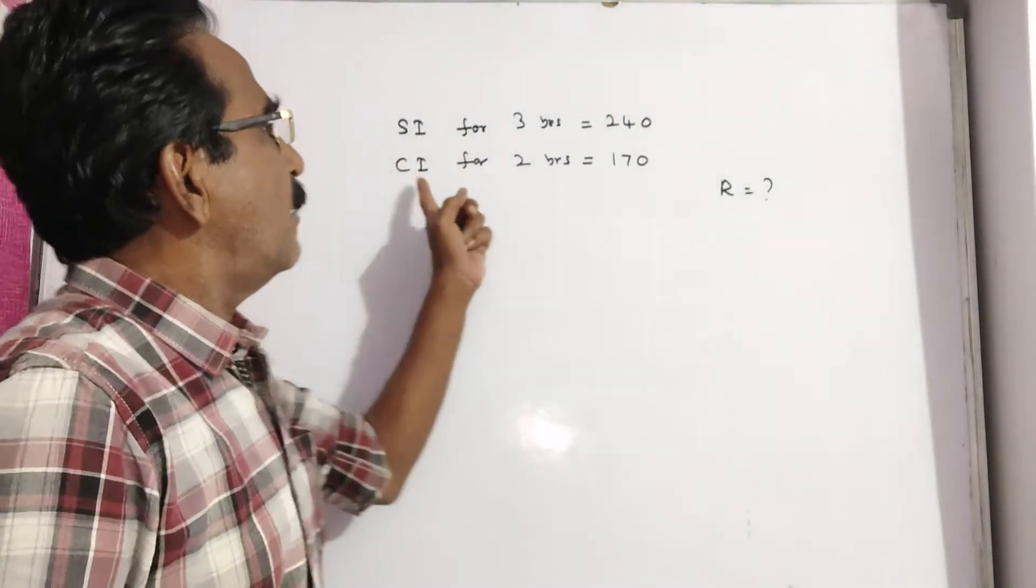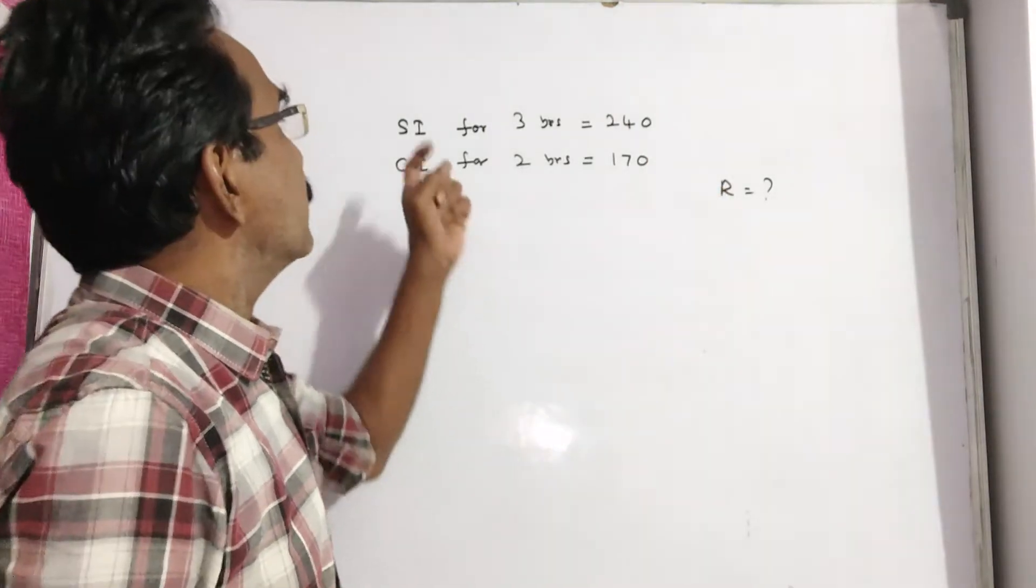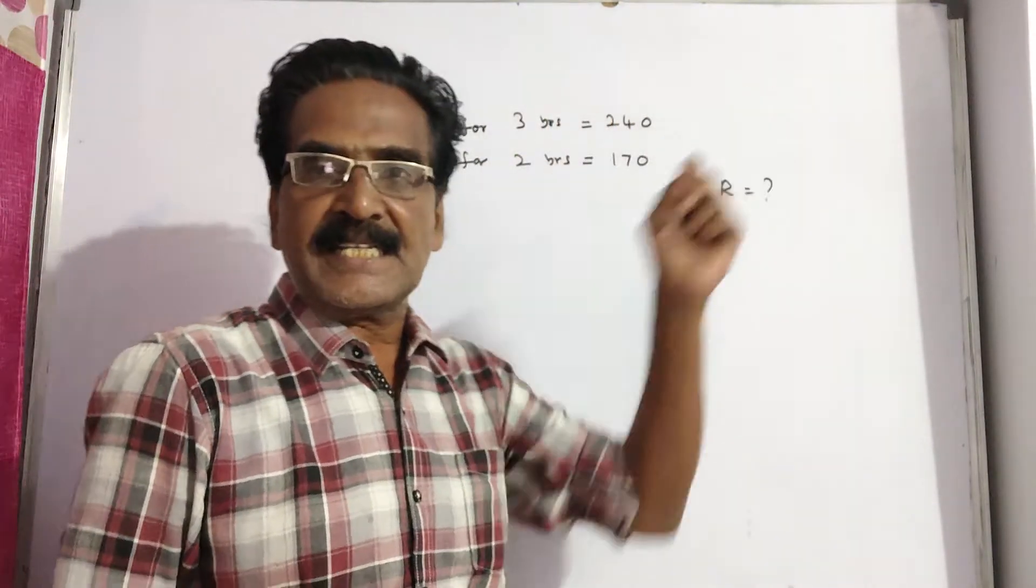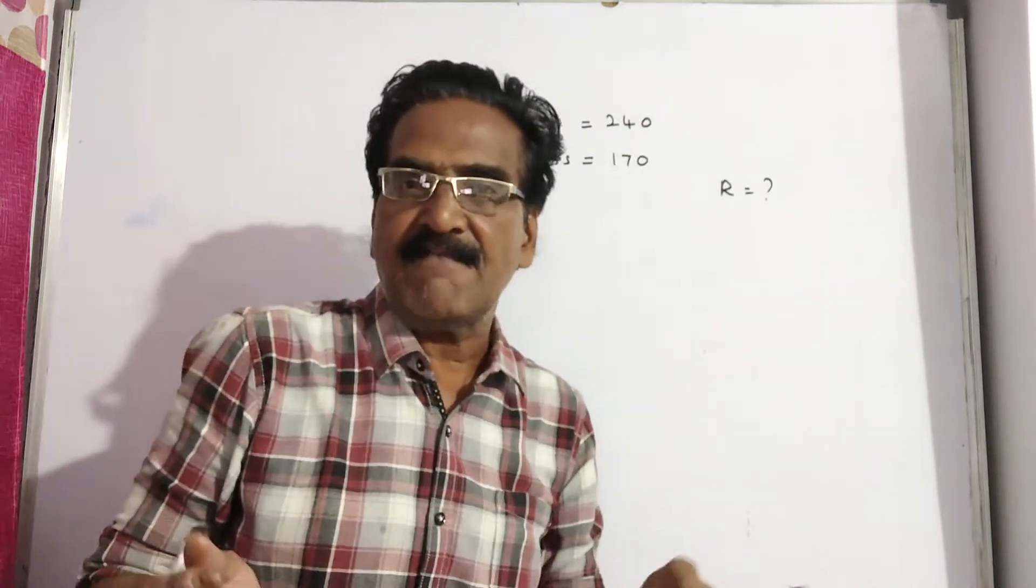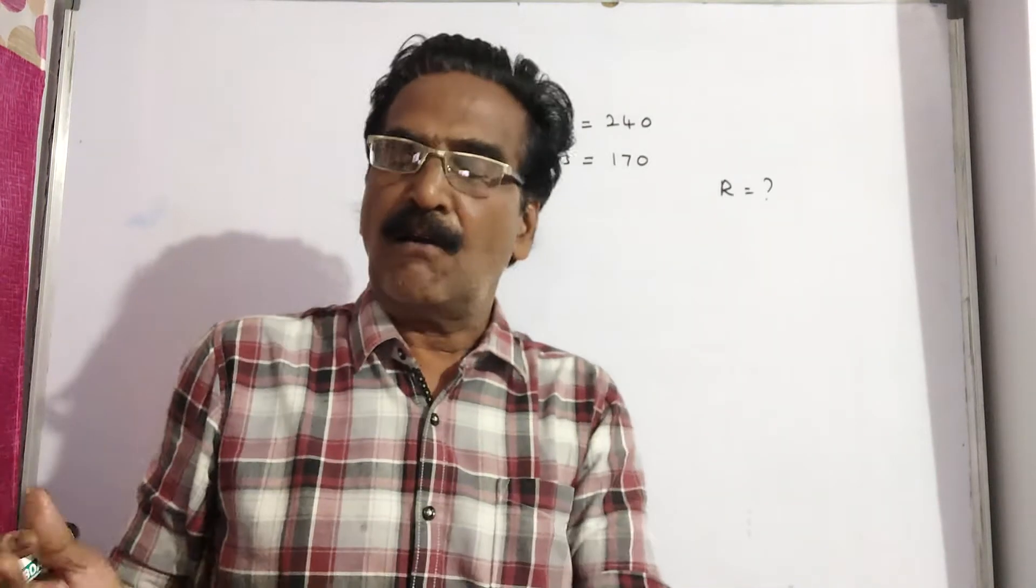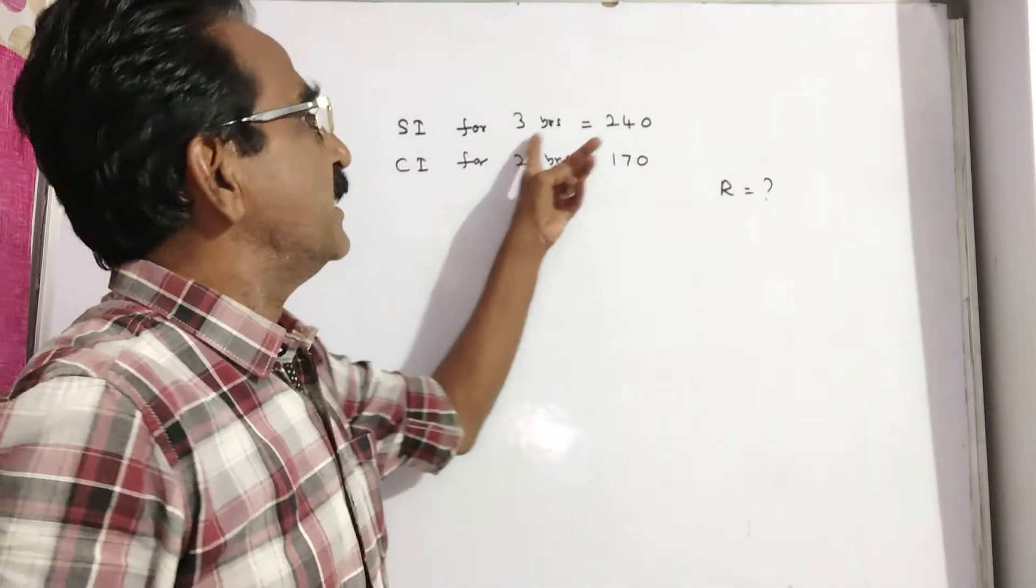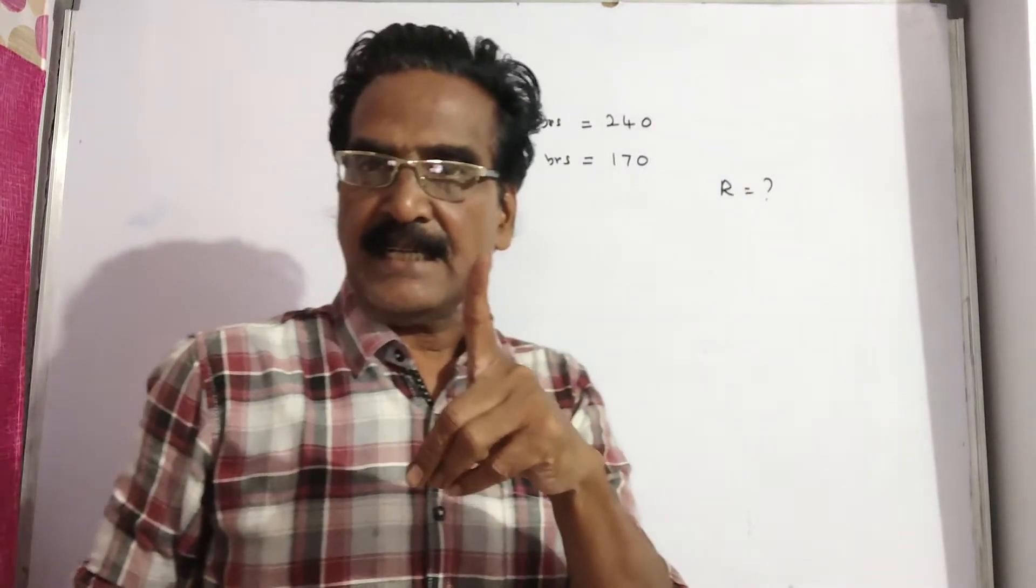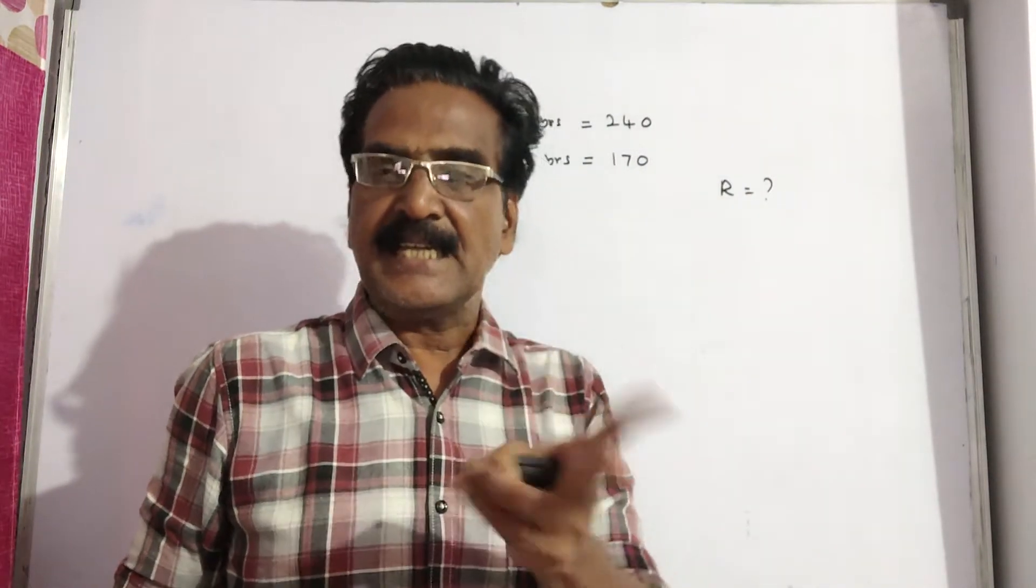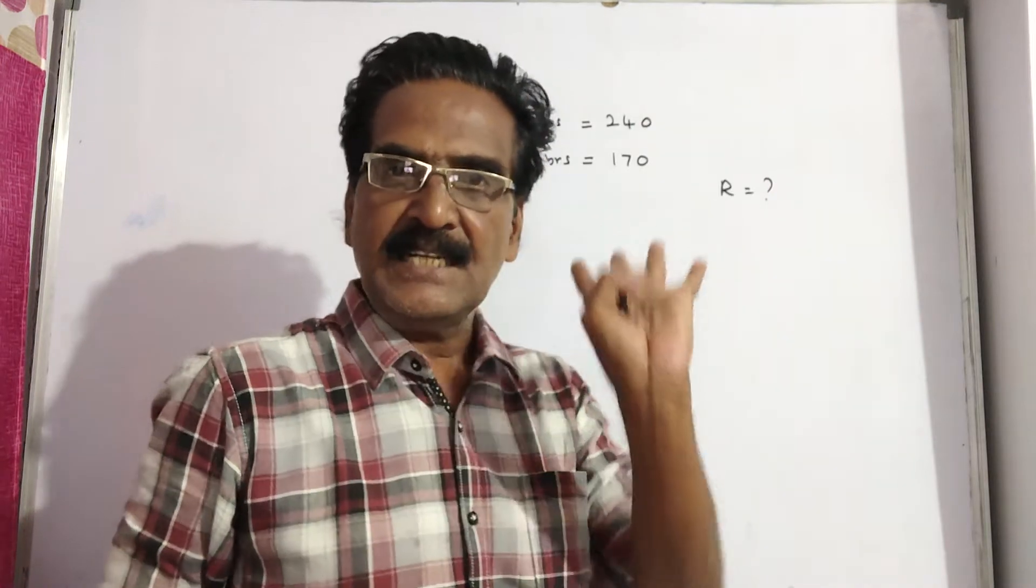See friends, compound interest for 2 years is equal to 170. SI for 3 years is 240. SI will be the same for all the years. So for 3 years, 240. For 1 year, 240 by 3 is 80. For 2 years, 2×80 is 160.